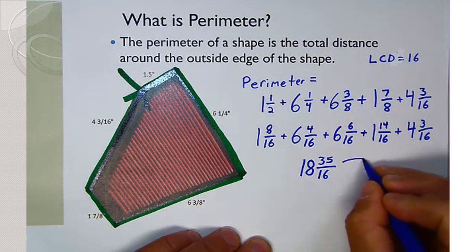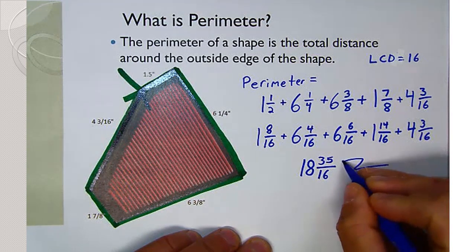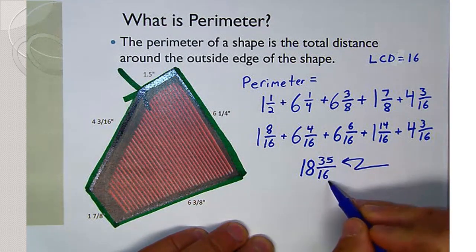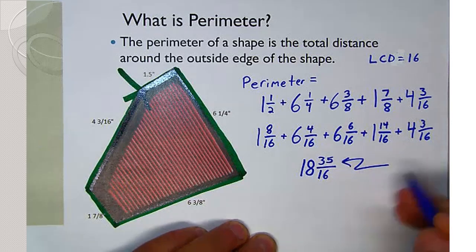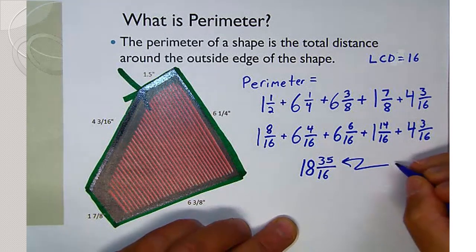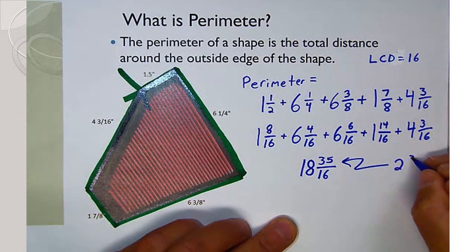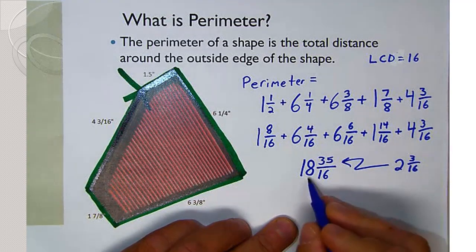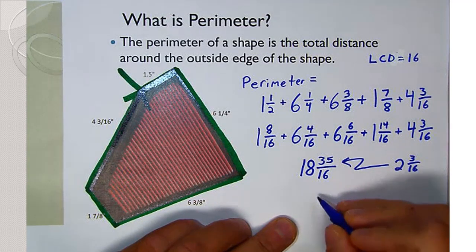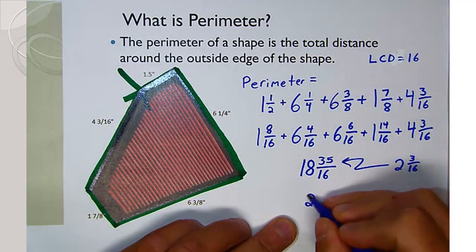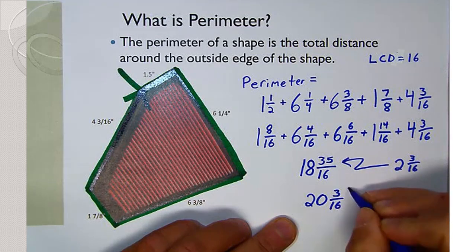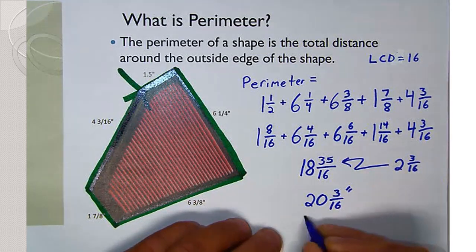Thirty-five sixteenths is obviously very improper. Sixteen goes into thirty-five two times with three left over. So we take those two and add them to the eighteen we already had, giving us twenty and three sixteenths. And that is our perimeter.